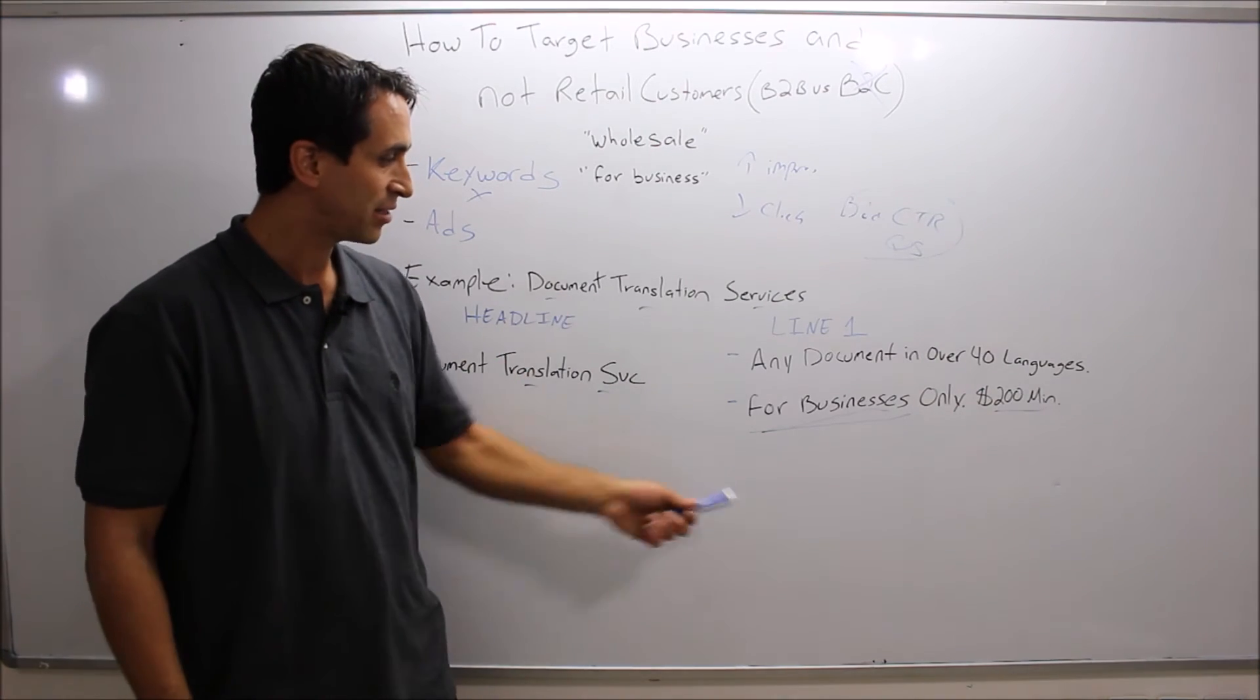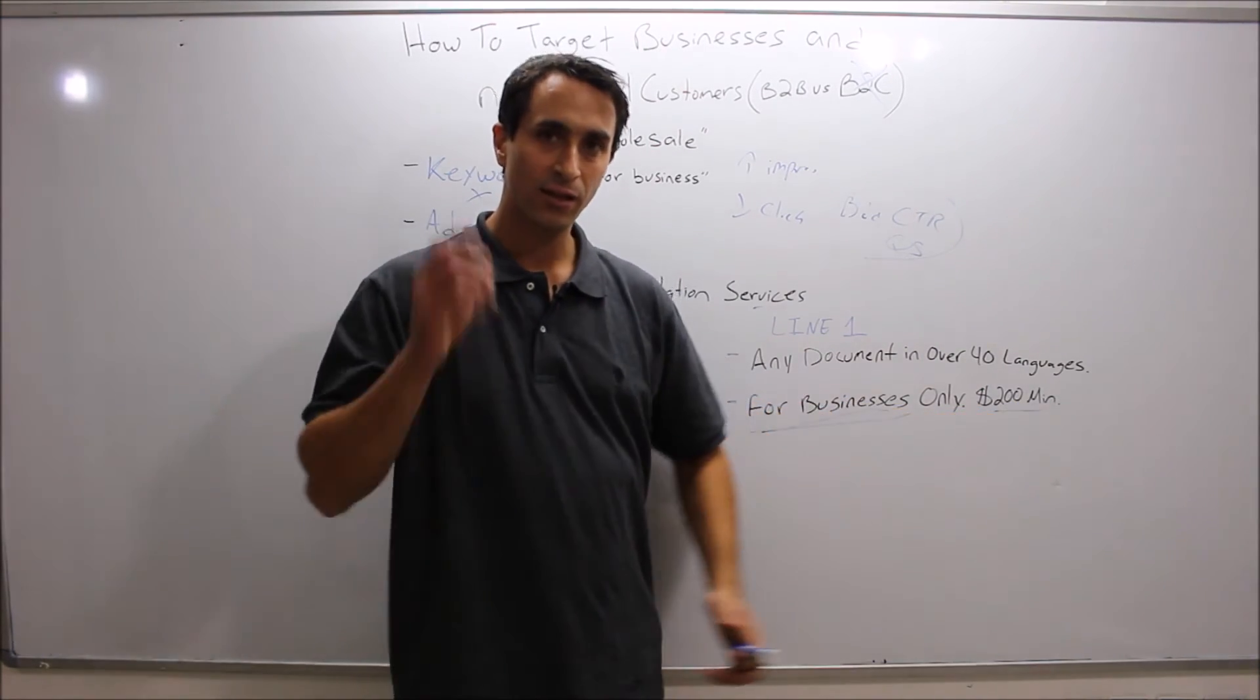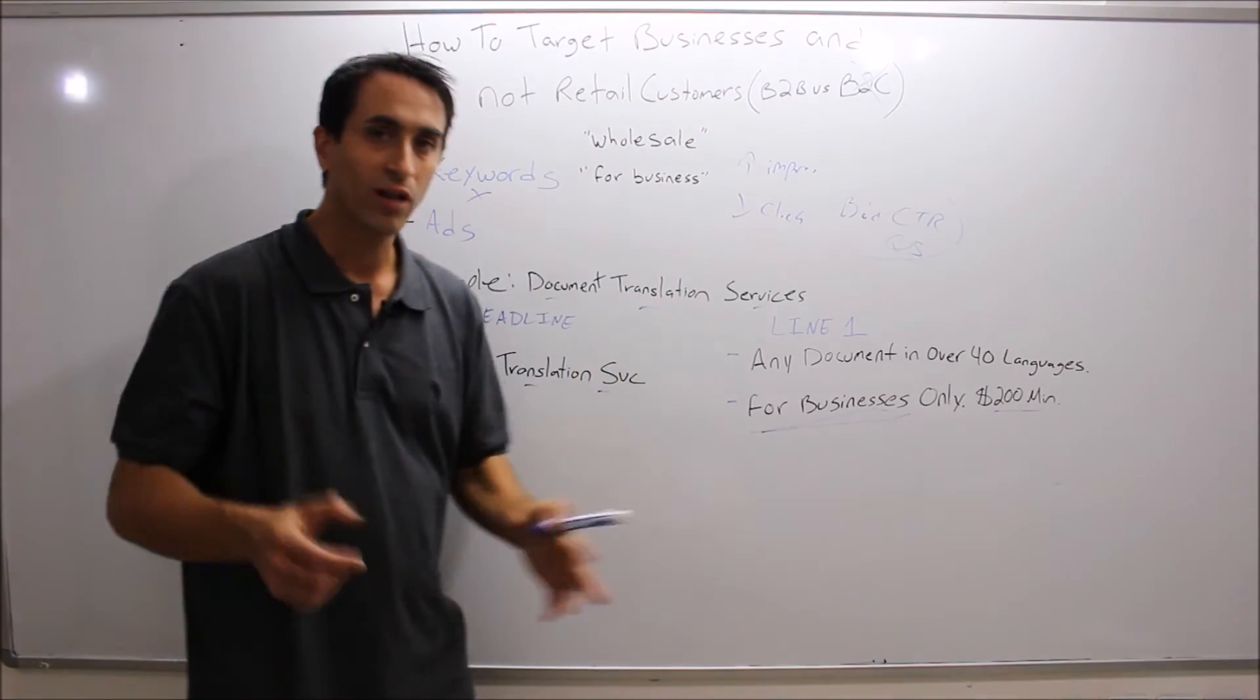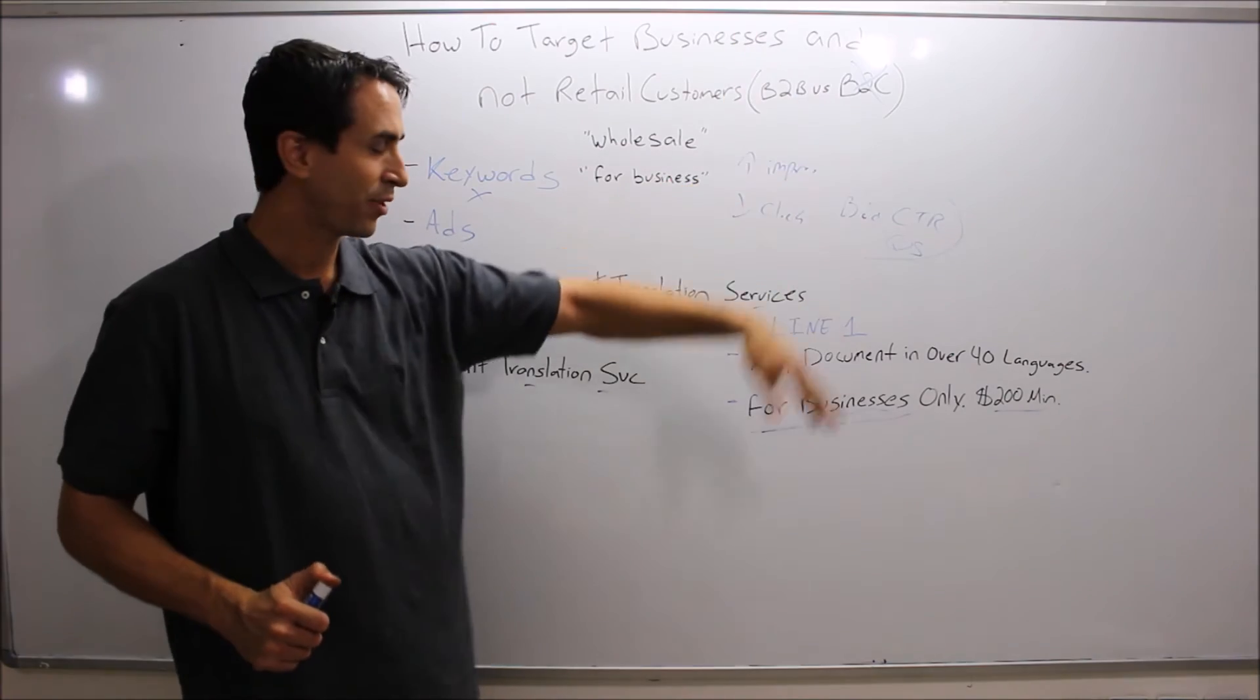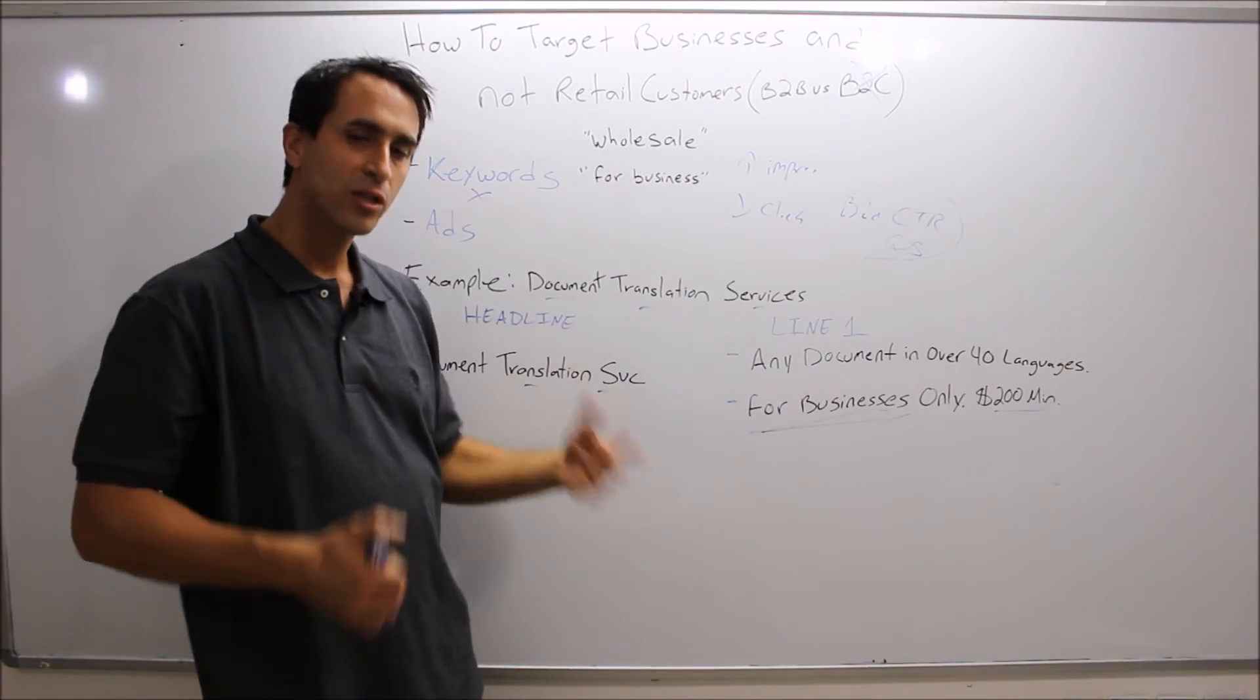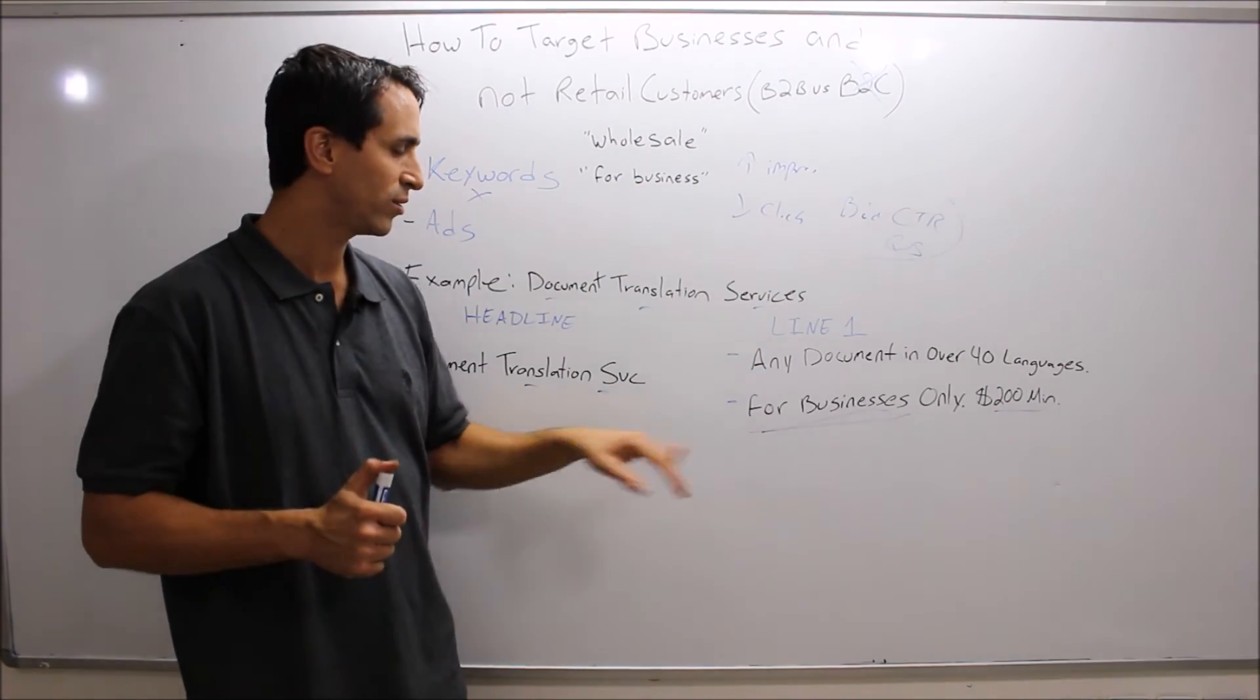Someone that clicks on an ad that says 'for business only, $200 minimum' and they still click on your ad - they are qualified traffic. After the click-through rate, quality score, and cost per click, all that stuff, you're still going to be better off targeting who you want to target.